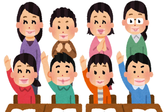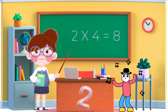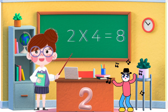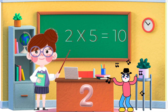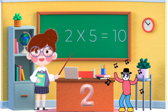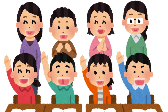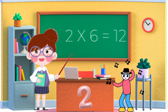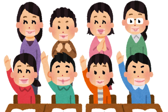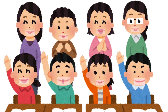2 fours are 8, 2 fives are 10, 2 sixes are 12, 2 sevens are 14.